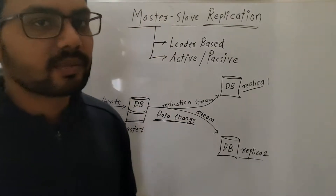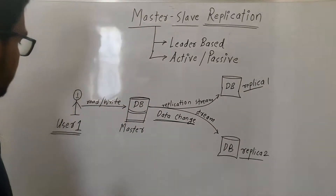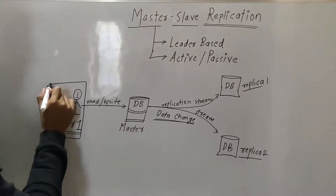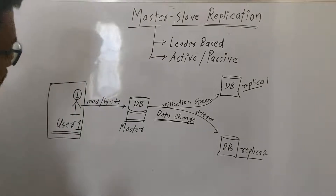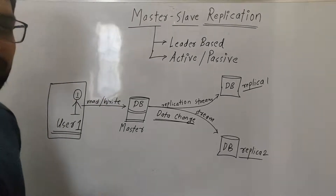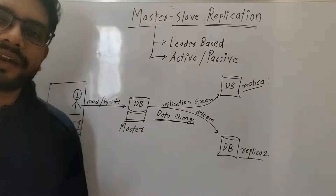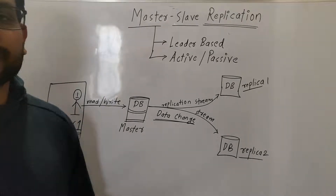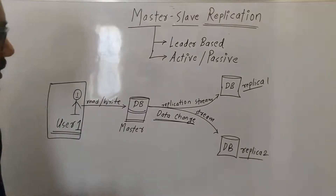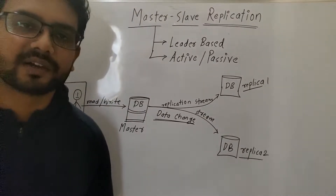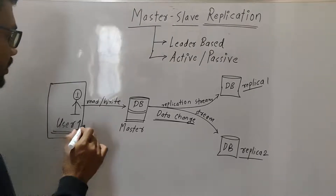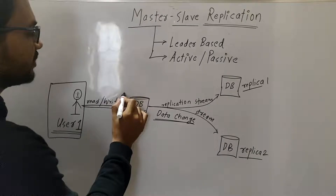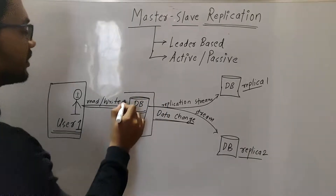So what happens in this replication is — as you can see in this diagram — this is the user. When the user makes a request, it can be of two types: mainly read and write. For write we can consider delete, update, and insertion. These three operations. And read is only for fetching data from the database.